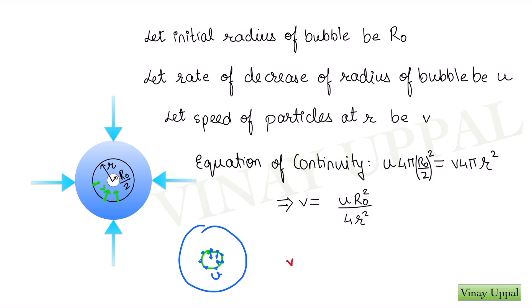Equation of continuity is that the velocity times the cross-sectional area is a constant. The speed U into the cross-sectional area here which is basically the surface area of this bubble, 4π R² where R is R0 by 2, should be equal to the same quantity at a distance R from the center. On this spherical surface, the speed of all the particles is V times the area which is 4π R². And that is how I get the velocity V at a distance R from the center. This is the speed of all the particles at a distance R from the center.